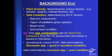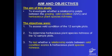The aim of this study was to investigate whether a relationship exists between grazing veld condition and herbaceous plant species richness. The objectives were to assess the veld condition of 12 sample plots, to determine the herbaceous plant species richness of the sample plots, and to test whether a relationship exists between veld condition scores and herbaceous plant species richness.